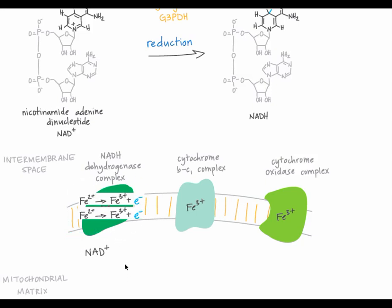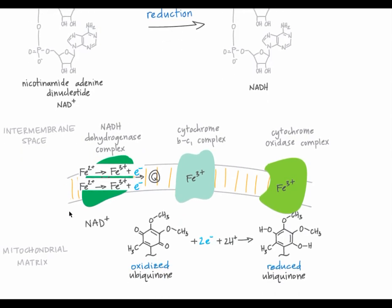Redox reactions occur in every step along the electron transport chain. The iron 2 plus ions in NADH dehydrogenase are oxidized back to iron 3 plus as they pass electrons to ubiquinone, a lipid-soluble electron carrier that travels from NADH dehydrogenase complex to cytochrome BC1 complex. Part of ubiquinone is drawn here below. In the oxidized form, ubiquinone looks like this. As it picks up two electrons from NADH dehydrogenase complex, ubiquinone is reduced to this form. Ubiquinone is oxidized back to its original form when it passes the electrons off to iron 3 plus ions of cytochrome BC1 complex, which are reduced to iron 2 plus.